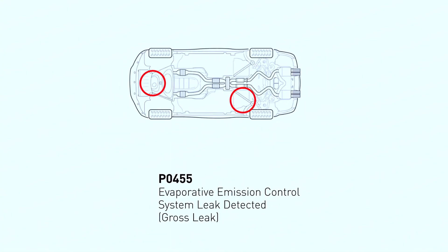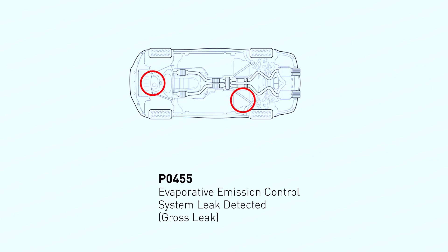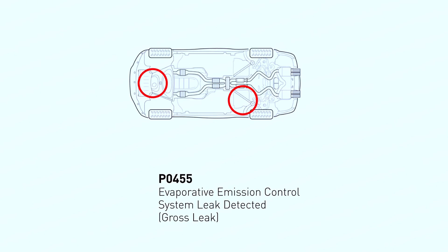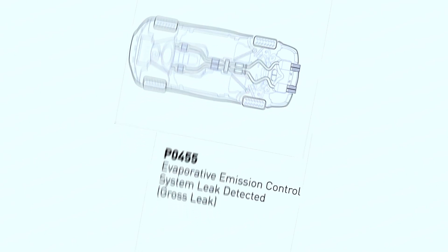The P0455 code signifies a large leak in your vehicle's evaporative emissions control system, or EVAP. This system is designed to capture and prevent unburned fuel vapors from escaping into the atmosphere. A leak in this system allows those vapors to escape, causing your car to fail emissions tests and reducing fuel efficiency.